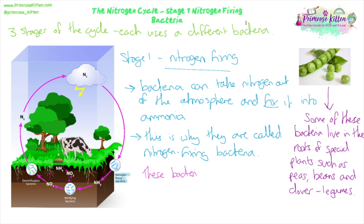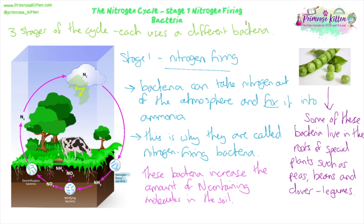To summarise, nitrogen-fixing bacteria increase the amount of ammonia in the soil. There is another way nitrogen can get fixed — involving lightning, not bacteria. When lightning strikes, its energy causes nitrogen to react with oxygen in the atmosphere, creating nitrates that fall and dissolve in rain, becoming part of the soil. This is another way nitrogen gets fixed from the atmosphere into soil, but it's just a natural process that doesn't involve bacteria.